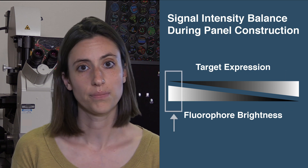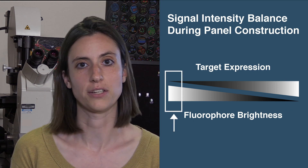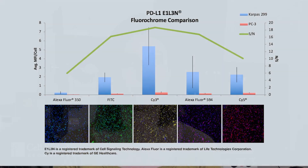Conversely, you can pair the weakest staining antibodies with the brightest conjugates. We recommend setting up a matrix composed of each primary antibody applied at its optimized dilution paired with each available fluorophore. Pick antibody-fluorophore pairs for each target that exhibit strong signal intensity and robust signal-to-noise ratio.